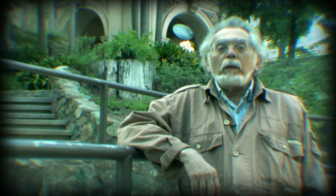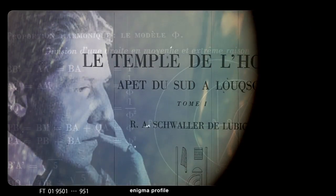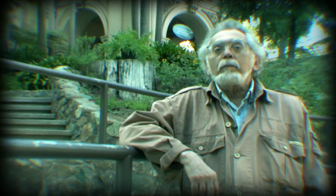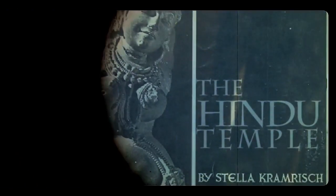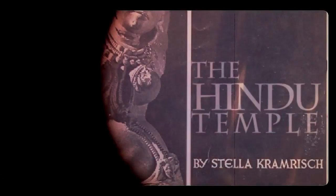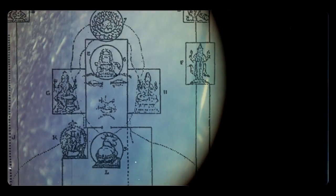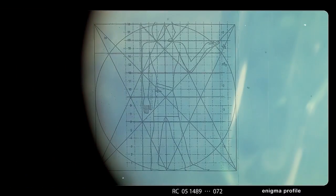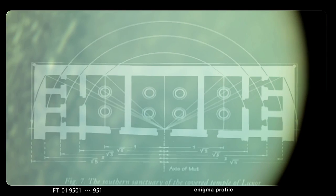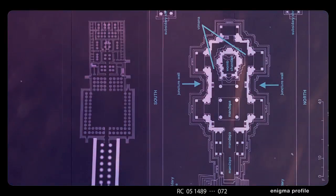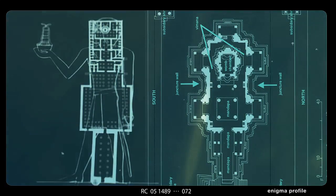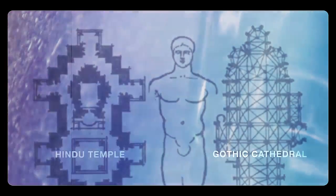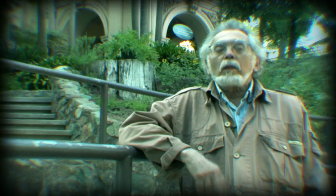When Schwaller de Lubicz was ready to publish his grand work, The Temple of Man — Le Temple de l'Homme — he stopped and downed tools for a bit, because at that time a massive study called The Hindu Temple by a scholar of Vedic and Hindu doctrine, Stella Kramrish, produced her book. Schwaller was amazed and delighted to find that the same geometric, harmonic, and numerical principles that commanded the structure of Luxor were also used by the Hindus and found expression yet again in the Gothic cathedrals, most significantly in Chartres. So the knowledge was handed down.